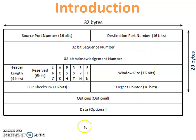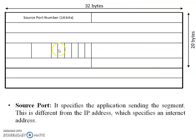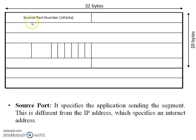This is the header of TCP. Let's explain each field of the header one by one. The first field is the source port number. It is a 16-bit field that specifies the application sending the segment. This is different from the IP address, which specifies an internet address.